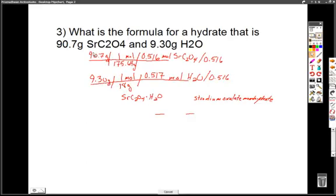So we take our 90.7 grams. We find the molar mass of the SrC2O4, which should be 175.64. We then solve for that number of moles, which is 0.516. Then we do the same thing for the water, if we have 9.30 grams of water. We divide it by the molar mass of water, 18 grams, and we get 0.517. Now what we want to do is set this to be a mole ratio. So we do that by dividing by the lowest number of moles, setting one of these moles equal to 1.